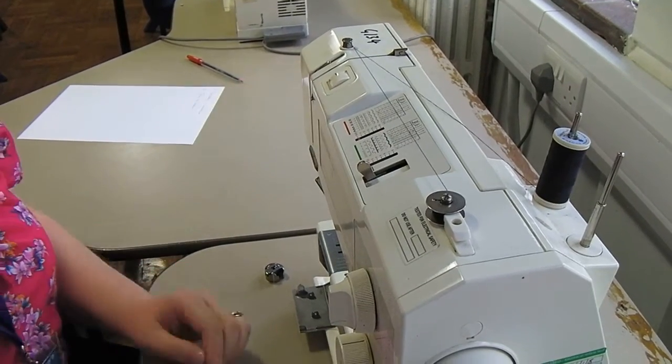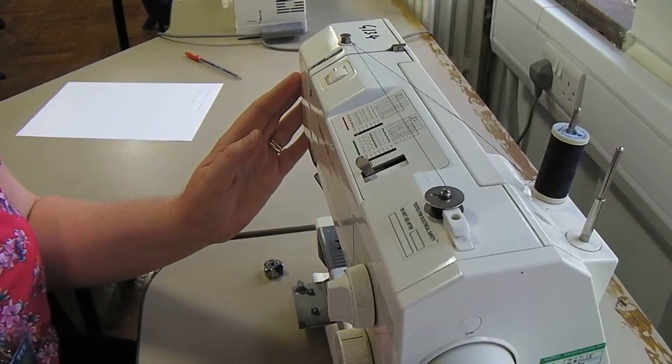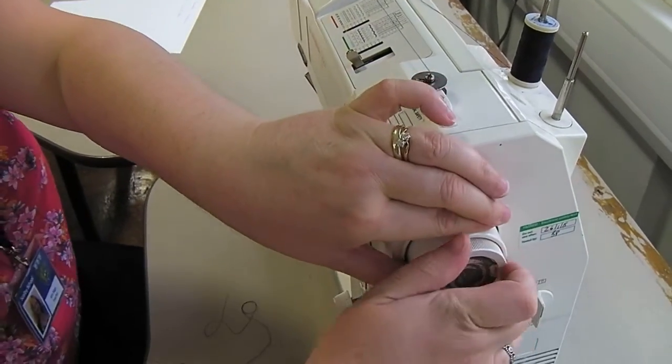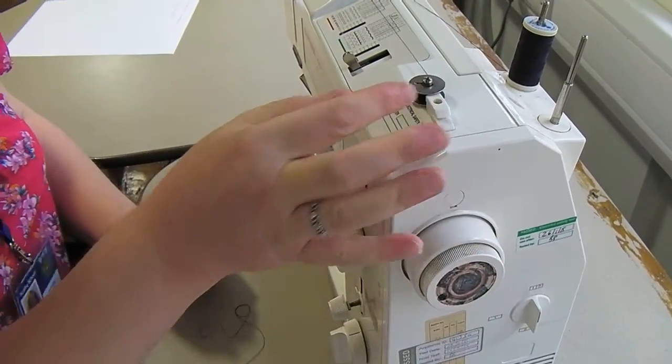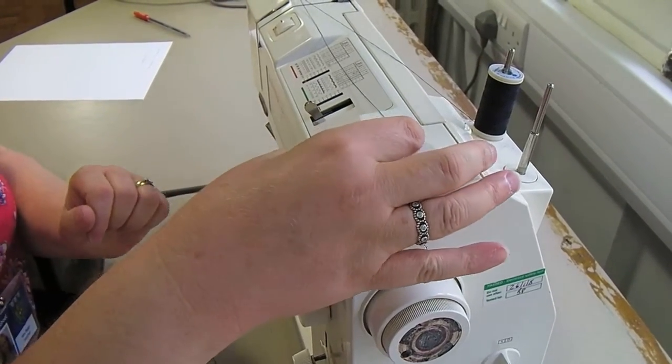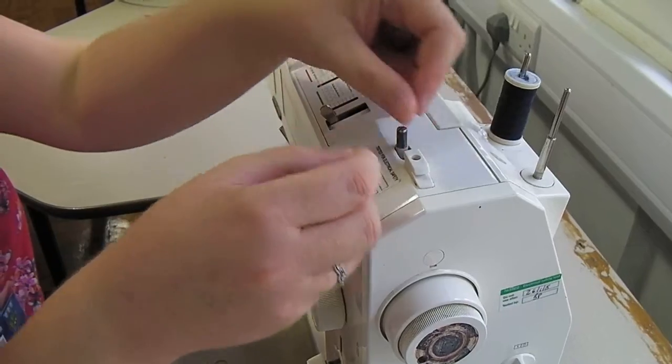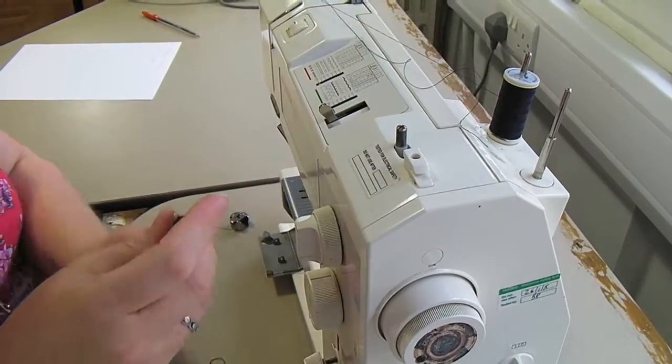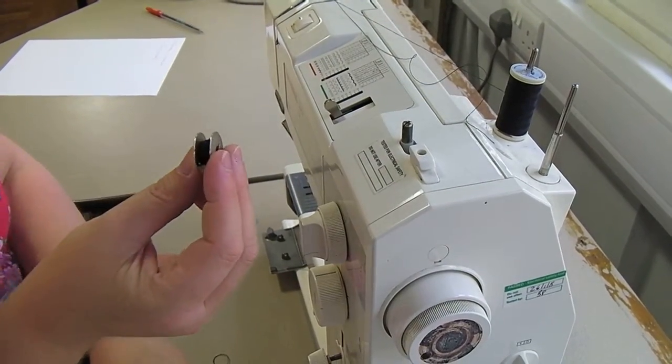Once you have the required amount, take your foot off the pedal and stop. Tighten up the centre of the hand wheel, then push the bobbin across to the left until it clicks again and it's released. Take your bobbin off, cut your thread, and you are ready to place it back into the machine.